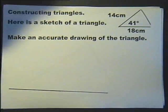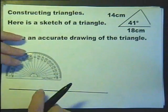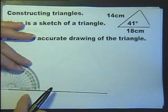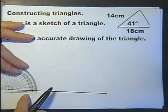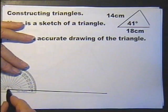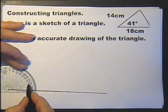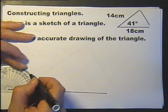Then we measure our angle of 41 degrees. So putting the center of the protractor on the end of the line and making sure it's 0, and then count 10, 20, 30, 40, 41.